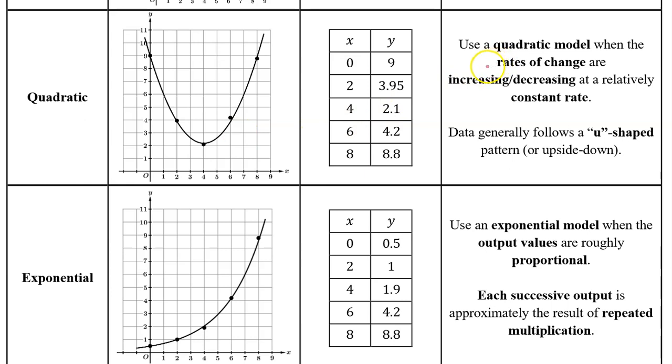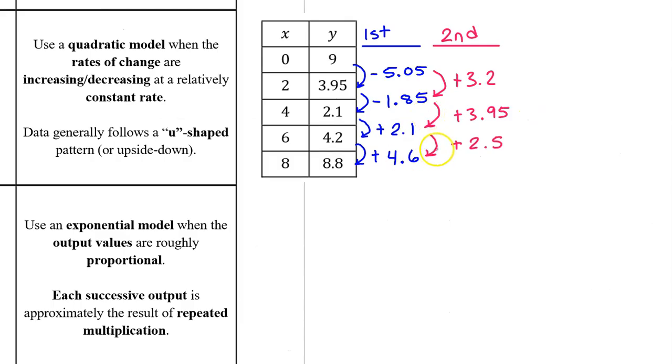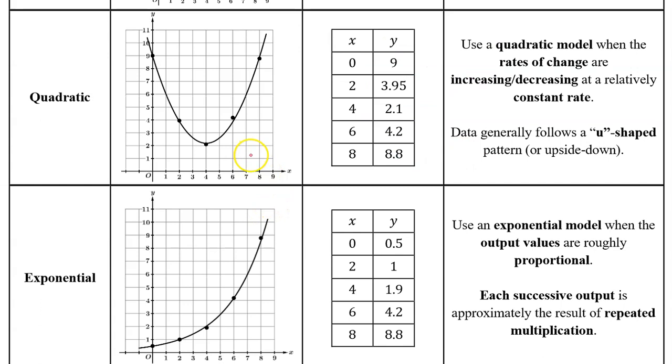We will use a quadratic model when the rates of change are increasing or decreasing at a relatively constant rate. In this example, we can tell that the rates of change are increasing at a relatively constant rate by looking at the second differences over equal length input value intervals. Notice that the second differences of the output values are all near 3. Another indication that we need a quadratic model is when the data forms a U shape, whether right side up or upside down.